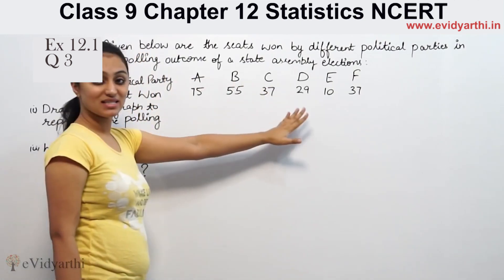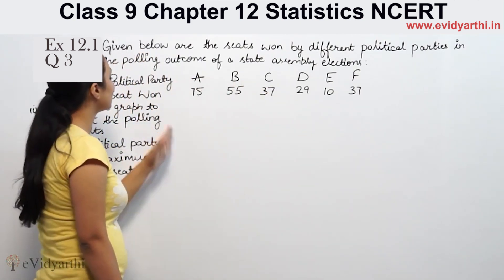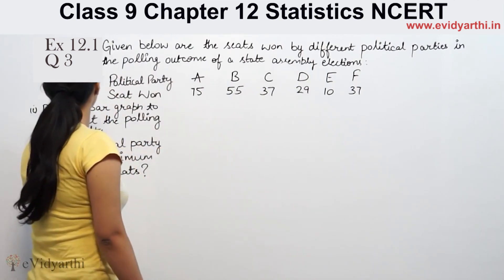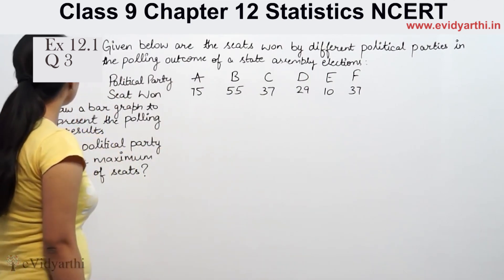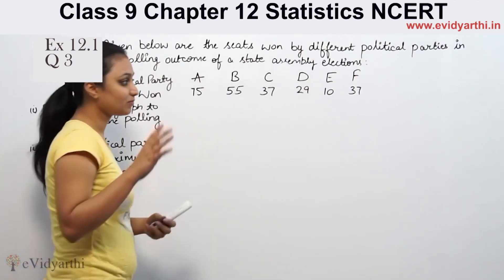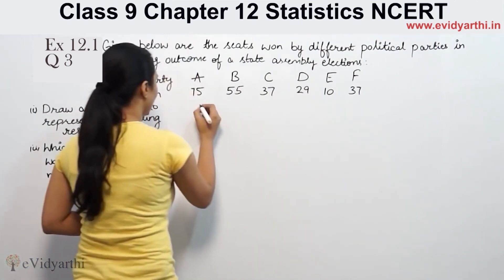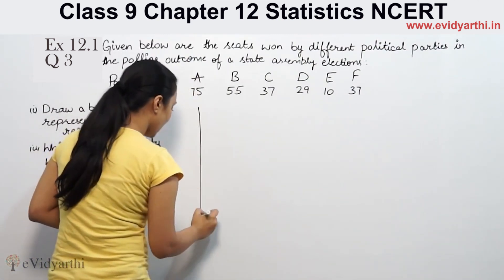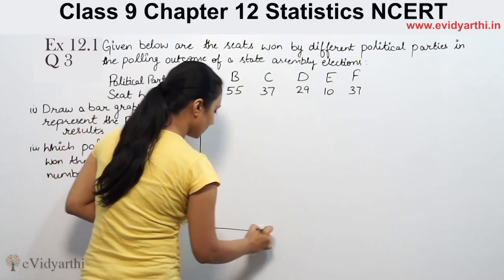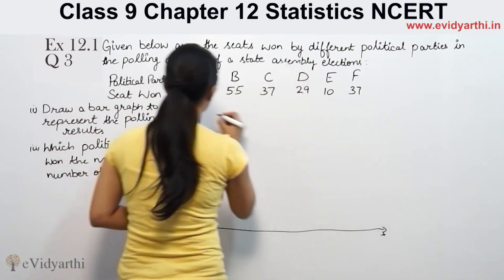So the political parties are A, B, C, D, and T. We have been given the number of seats for each. The first task is to draw a bar graph to represent the polling results. So we have to represent them in a bar graph. This is the y-axis and this is the x-axis.